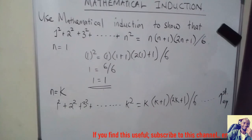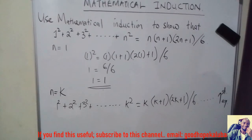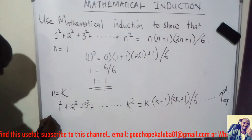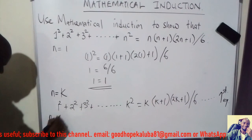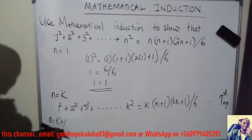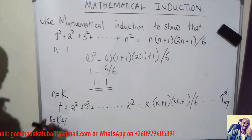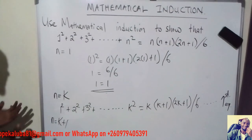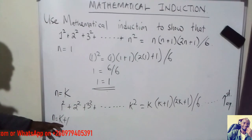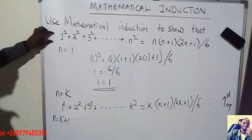If it is true for n equals k, then it should also be true for the next value, which is k plus 1. So we set n equal to k plus 1 and plug k plus 1 wherever there is n to form equation 2. Then we check if the right-hand side and the left-hand side of equation 2 are equal. If they are, then this formula is correct.